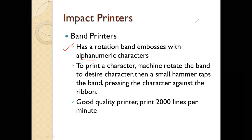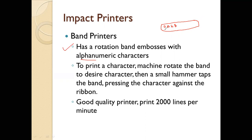So this band or rod has characters on its surface. For example, here is a capital A, and here is a capital B. These characters are physically raised on the surface of the rotating band.